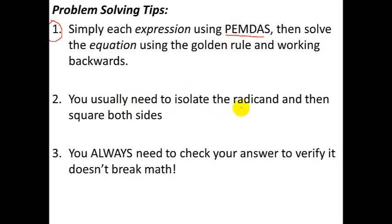You need to isolate the radicand and then square both sides. That's almost always how you're going to do it. Take care of all multiplication, division, adding and subtracting, get that radical by itself, and then square both sides — whereas in the past we got the squared part by itself and took the square root of both sides. Same idea, just the opposite property. And then the last thing is just a reminder: you always have to check your answers to make sure that you didn't get an extraneous solution.